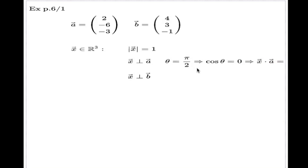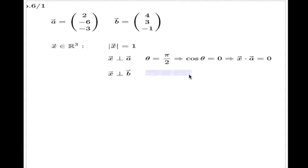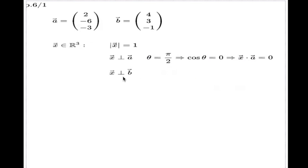Which effectively means that the dot product of x and a is zero. Similarly, if you make the same interpretation of this orthogonality condition, the dot product of x and b must also be zero. So the whole task is we need to find a vector in R³ which is unital, which makes this happening, and which makes this happening. We interpret it as geometric conditions in the algebraic terms.